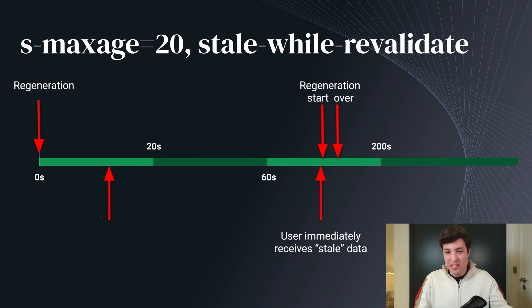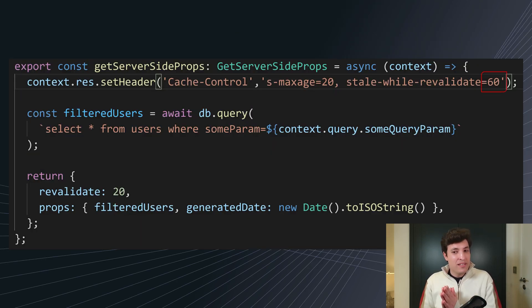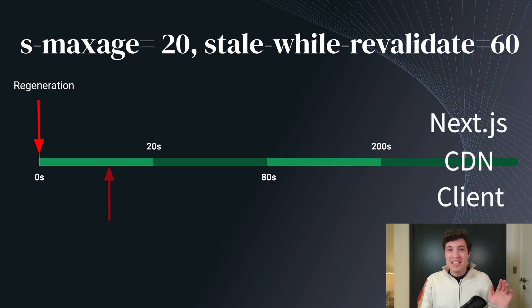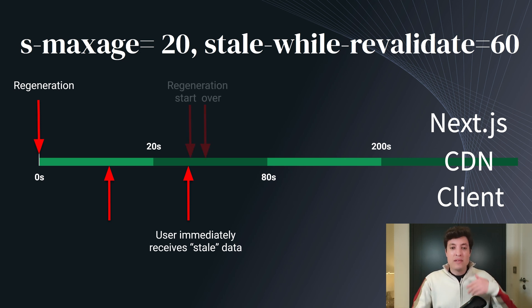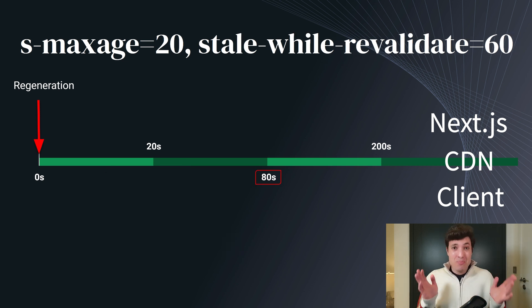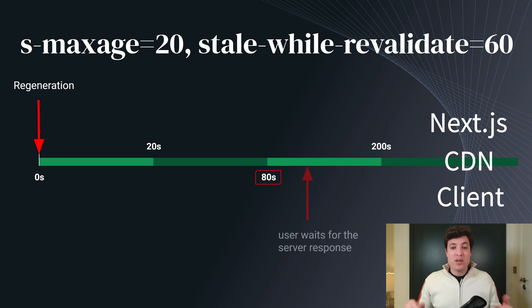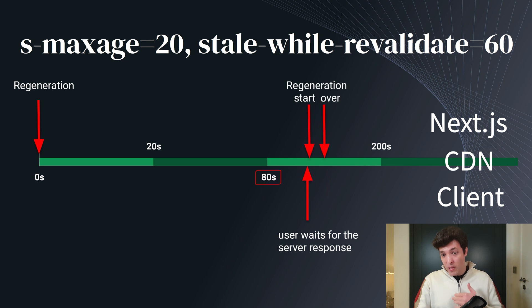We can go even a step further by adding stale-while-revalidate equals 60. For the first 20 seconds, the same as before — no changes. Now if a user requests something between 20 seconds and 80 seconds — which is the s-maxage value plus the stale-while-revalidate value — the user receives stale data immediately and Next.js starts a new regeneration. The important part starts at 80 seconds (20 plus 60): after this point, we will have blocking again, so users no longer receive stale data and instead receive fresh data.